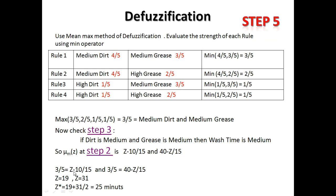Solving (z − 10)/15 = 3/5 gives z = 19, and solving (40 − z)/15 = 3/5 gives z = 31. Taking the mean of these two values: (19 + 31)/2 = 25 minutes. This is our crisp output — the washing machine will run for 25 minutes when dirt is 60% and grease is 70%.